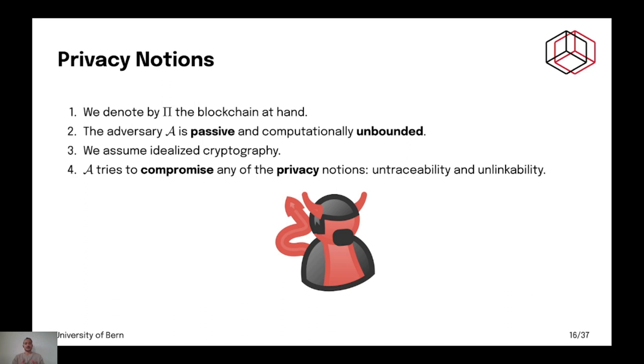Let's talk a little bit about the adversary. So, the adversary is passive. That means it observes only. And is computationally unbounded. So, for that, we also need idealized cryptography. Otherwise, it could break any cryptographic protocol and mechanism and system. The purpose of A is that it tries to compromise any of the privacy notions, namely untraceability and unlinkability.